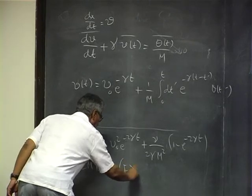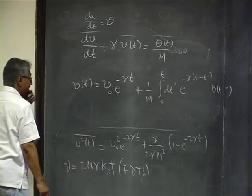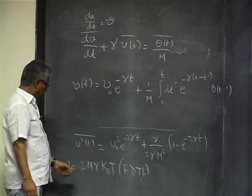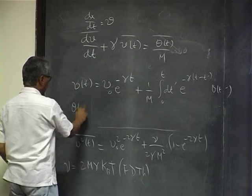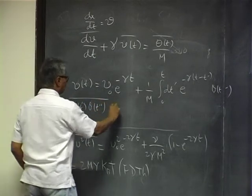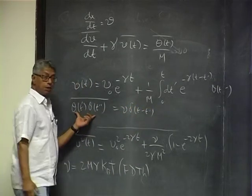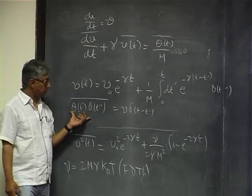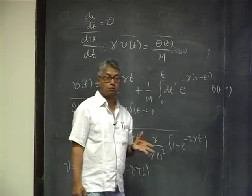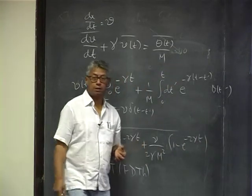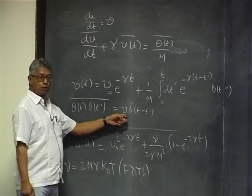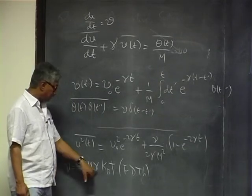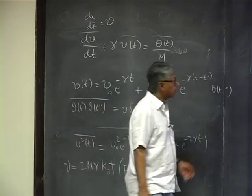This is called the fluctuation-dissipation theorem (FDT) because γ is the friction coefficient associated with dissipation, while ν was the pre-factor of the noise correlation ⟨θ(t′)θ(t″)⟩ = ν δ(t′−t″), associated with equilibrium fluctuations like resistor fluctuations or Nyquist noise. So fluctuation gets related to dissipation, and that relationship is the fluctuation-dissipation theorem.